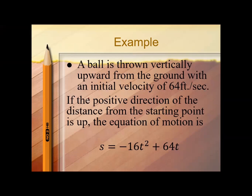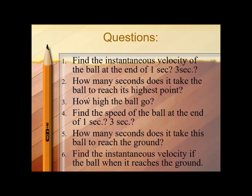Here is our example. A ball is thrown vertically upward from the ground with an initial velocity of 64 feet per second. If the positive direction of the distance from the starting point is up, the equation of motion is s = −16t² + 64t. We need to: (1) find the instantaneous velocity at the end of one second and three seconds; (2) how many seconds does it take to reach the highest point; (3) how high does the ball go; (4) find the speed at the end of one second and three seconds; (5) how many seconds does it take to reach the ground; and (6) find the instantaneous velocity when it reaches the ground.